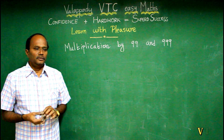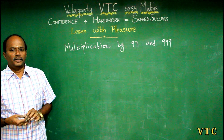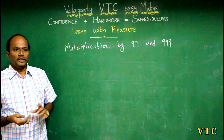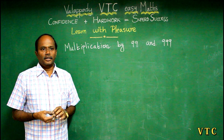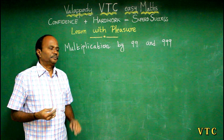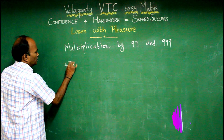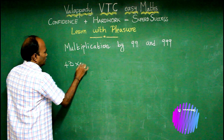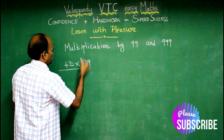How can we multiply without any table? How can we multiply? For example, for 43, 99 multiplied by 99.